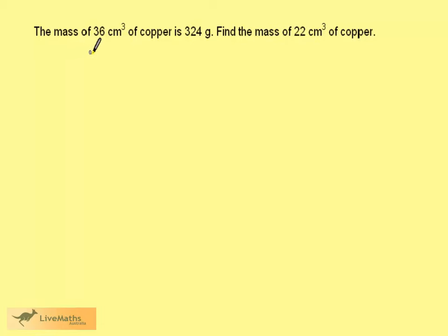The mass of 36 cm³ of copper is 324 g. We want to find the mass of 22 cm³ of copper.